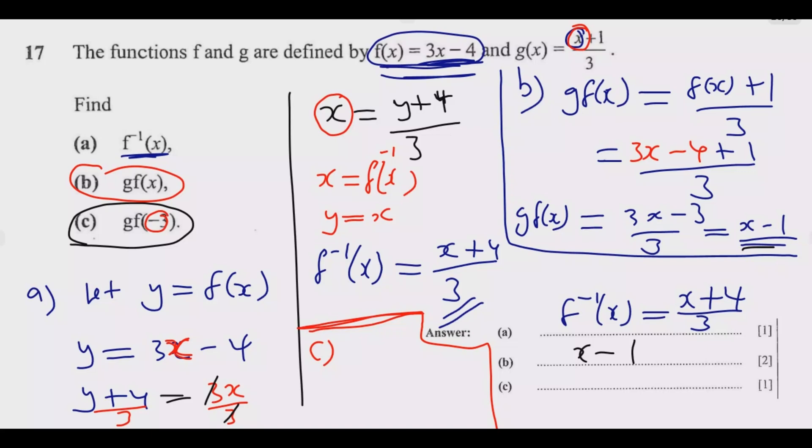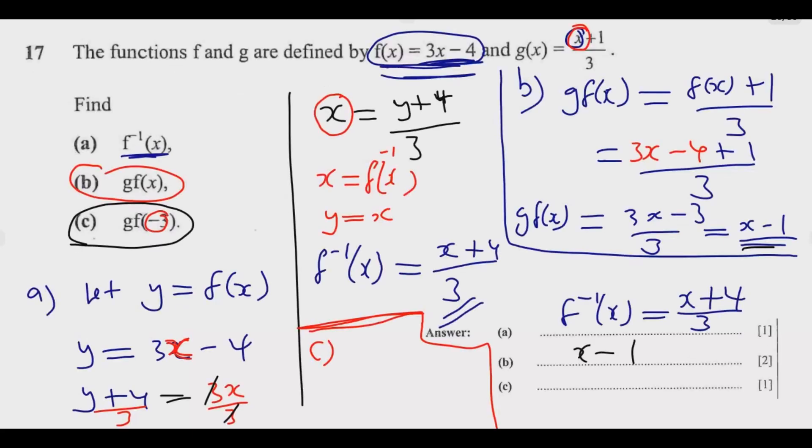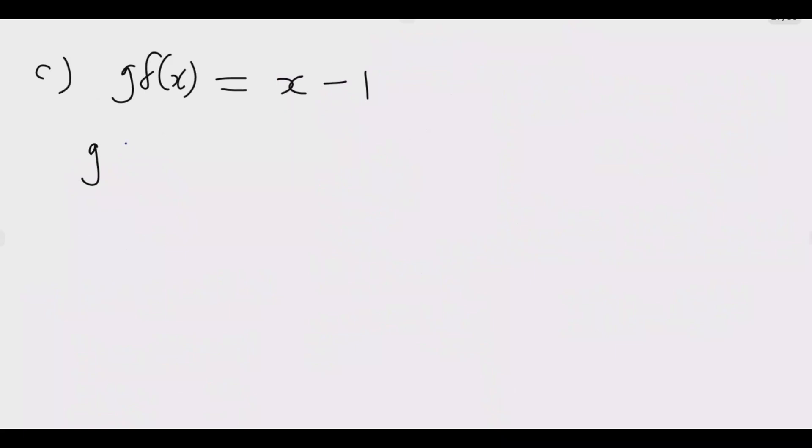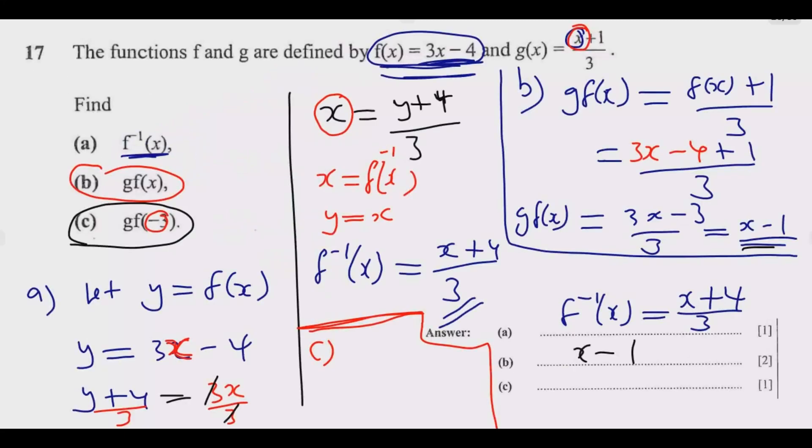For part (c), we have g(f(x)) equals x minus 1. To find g(f(-3)), it will be negative 3 minus 1. Whenever there's x we're replacing it with negative 3. This gives me negative 4. So negative 4 is the answer. You write in your exam paper probably like that in the answer provided.